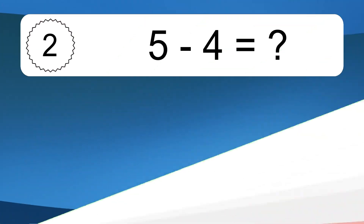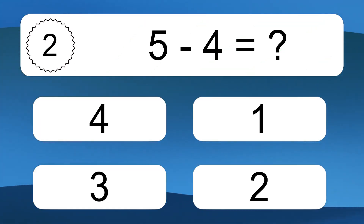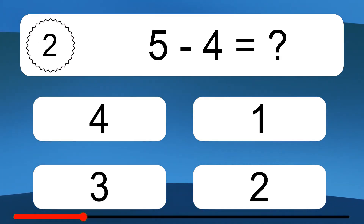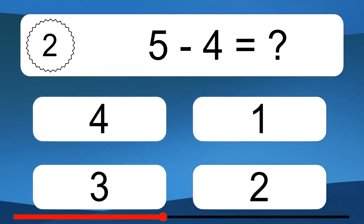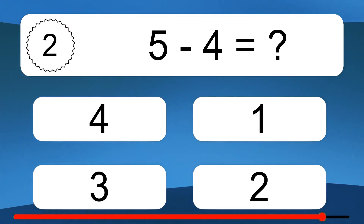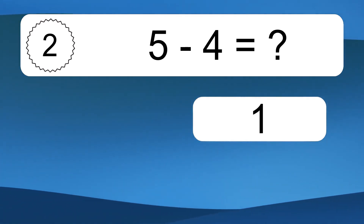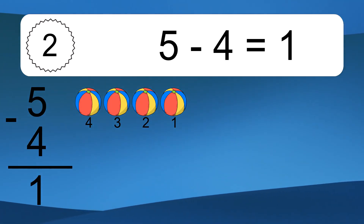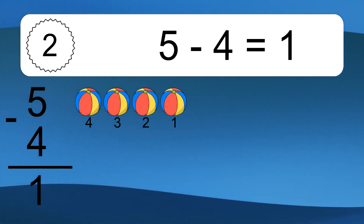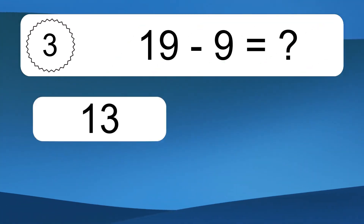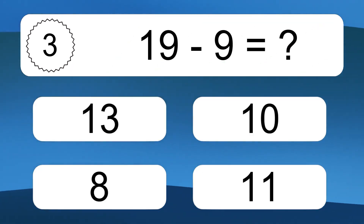5 minus 4 equals what? 5 minus 4 equals 1. Let's count it: 4, 3, 2, 1. 19 minus 9 equals what?